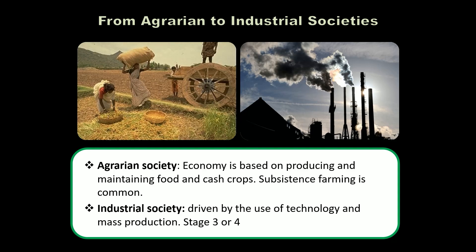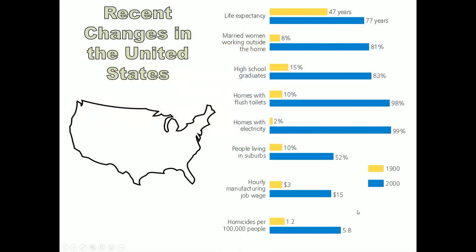Here's an image showing demographic transition in the United States — yellow bars represent 1900, blue represents 2000. Life expectancy in 1900 was 47 years; by 2000 it was 77 years. Some countries now have life expectancies past 80 years.